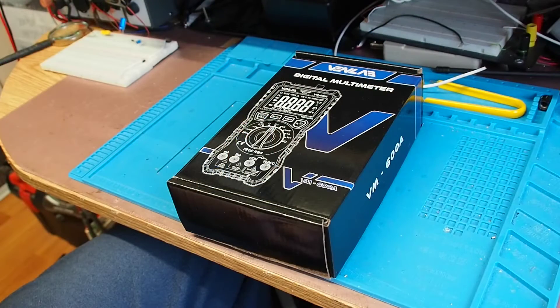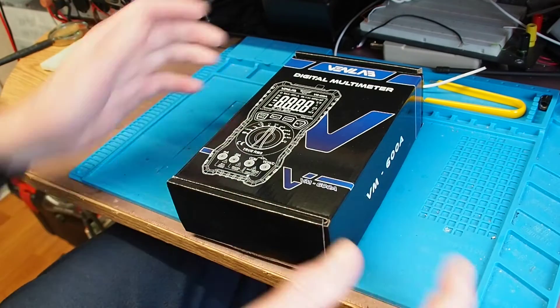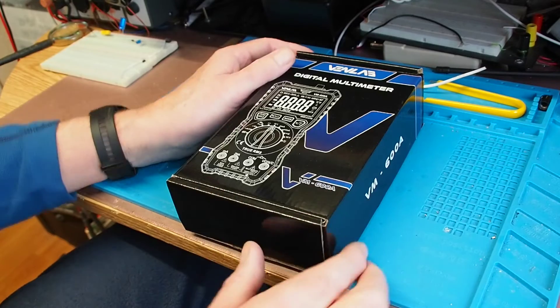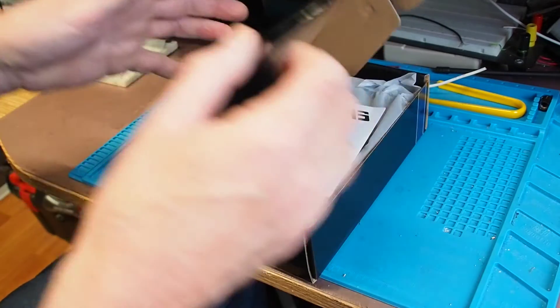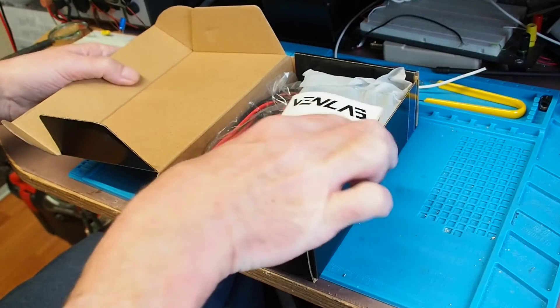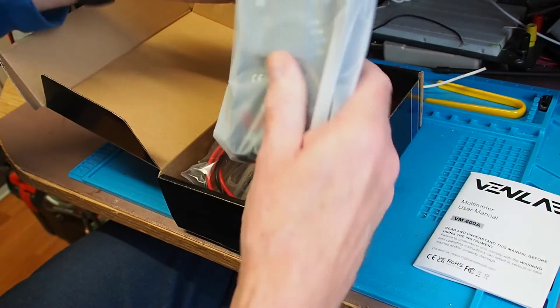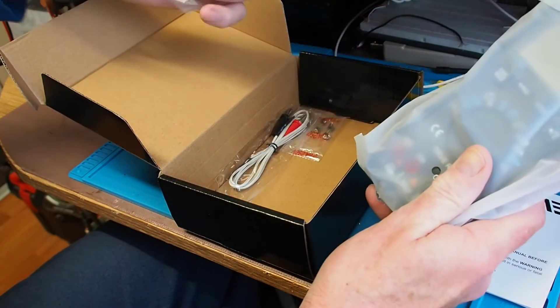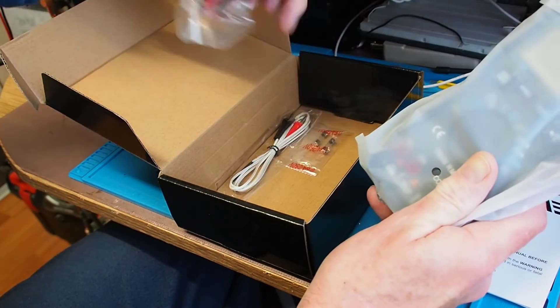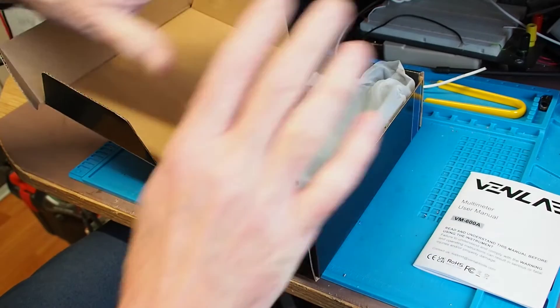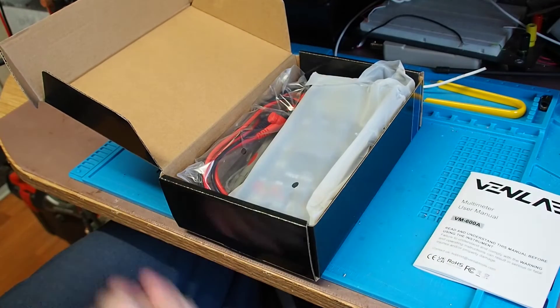Here we have the meter, it's the Venilab VM 600A. In the box we get a manual, meter itself in a protective bag, some leads, a thermocouple, and a couple of fuses. I'm going to get this set up and then we'll put it through its paces.